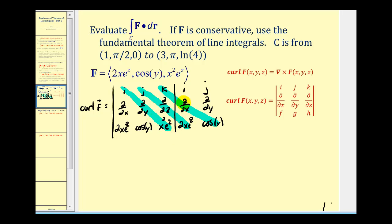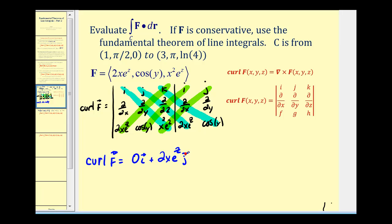We'll add the products of the blue diagonals and then subtract the products of the green diagonals. The partial derivative of x squared e to the z with respect to y is zero, plus the partial derivative of 2x e to the z with respect to z, plus the partial derivative of cosine y with respect to x, which is zero. Minus the green diagonals: the partial derivative of 2x e to the z with respect to y is zero, and the partial derivative of cosine y with respect to z is also zero. Then the partial derivative of x squared e to the z with respect to x is 2x e to the z.